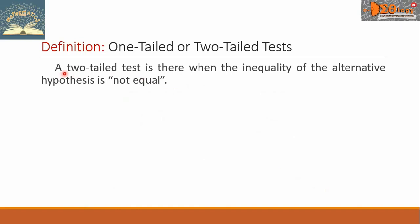On the other hand, a two-tailed test is there when the inequality of the alternative hypothesis is not equal.